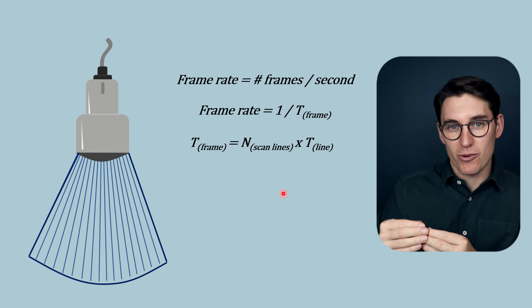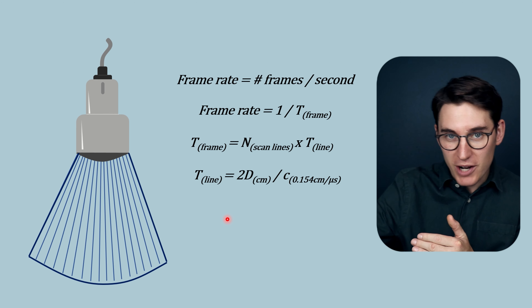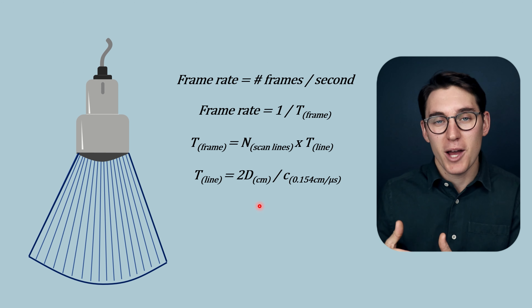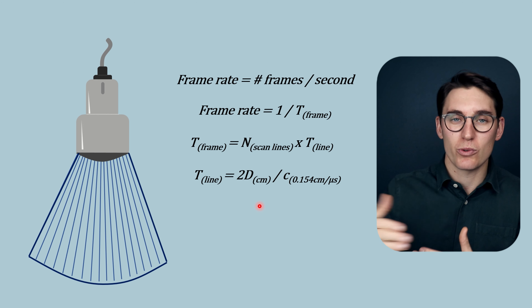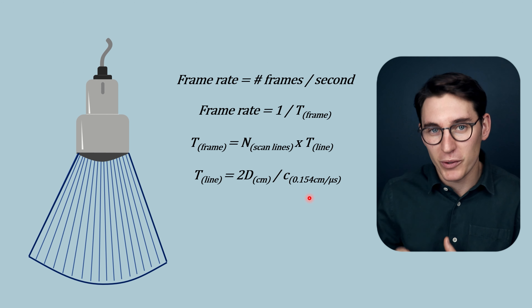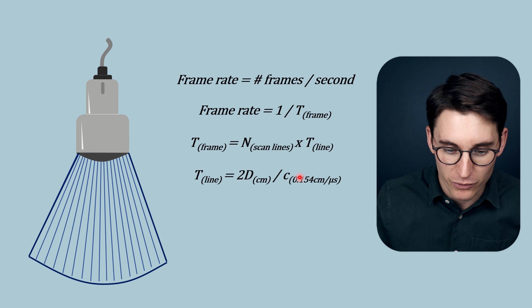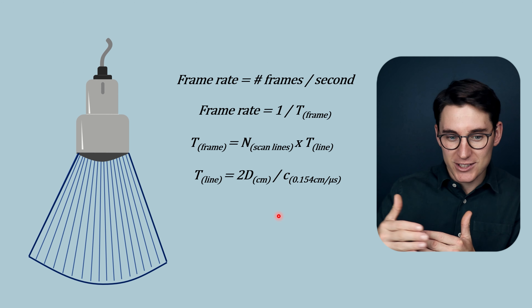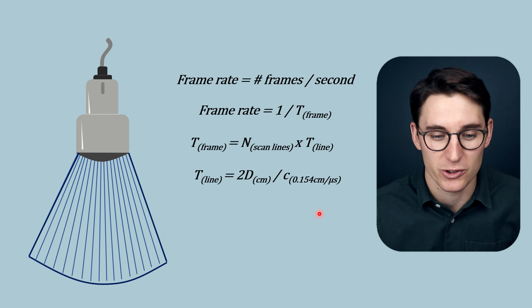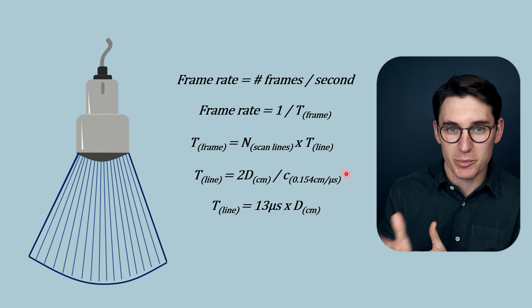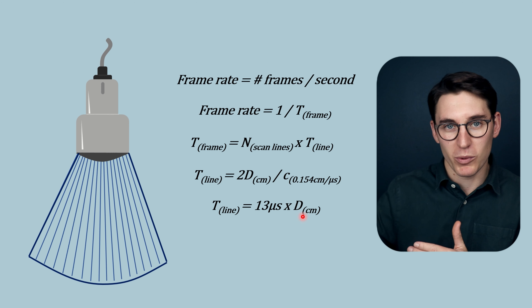We can calculate that round trip time by taking the depth we want to image and multiplying it by two — we travel the depth into tissue and the same distance back. We then divide that total distance by the speed of sound in tissue, which gives us the total round trip time. The speed of sound in soft tissue is 1,540 meters per second. Converting to centimeters per microsecond, the time it takes for one line of data to be acquired is 13 microseconds times the depth we want to image. Increasing depth increases the time to acquire a single A-line.